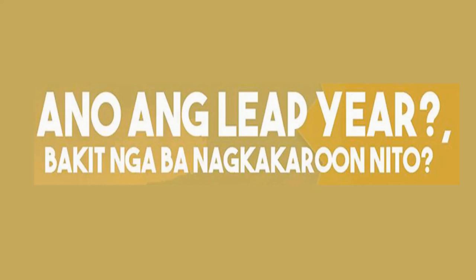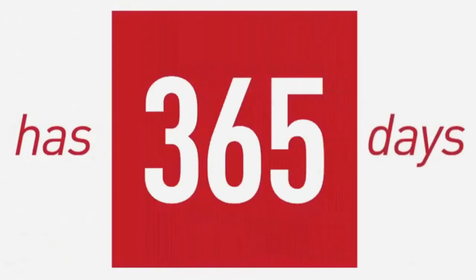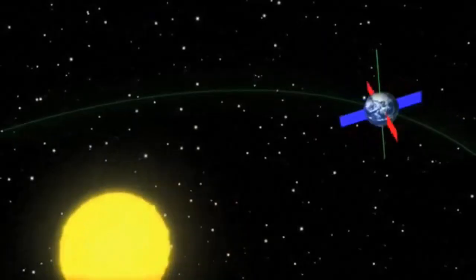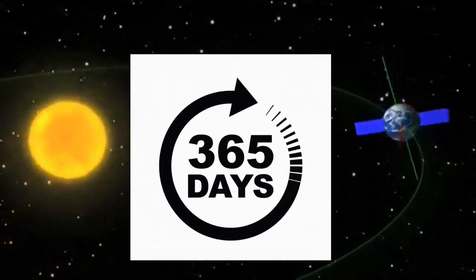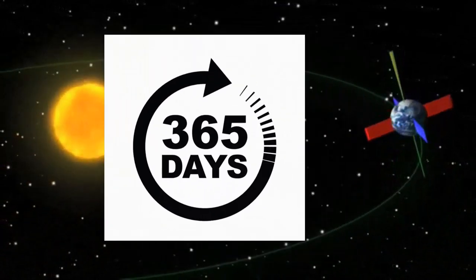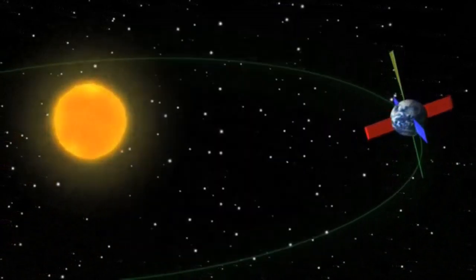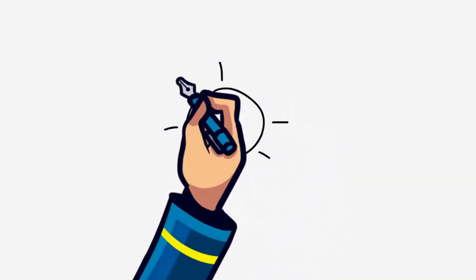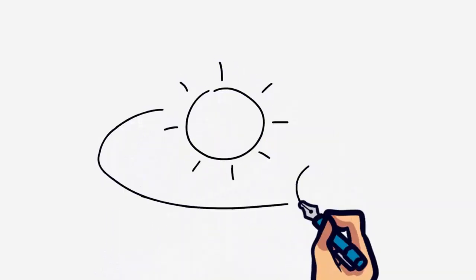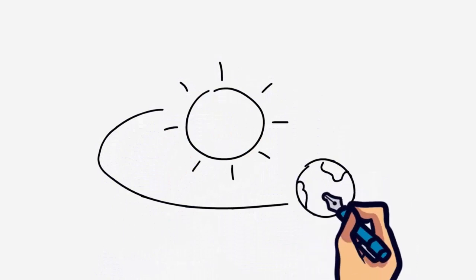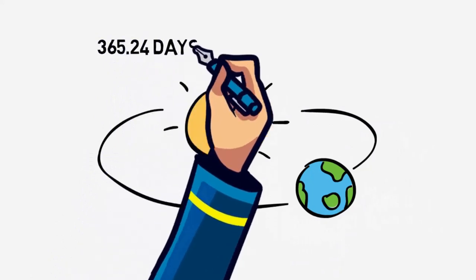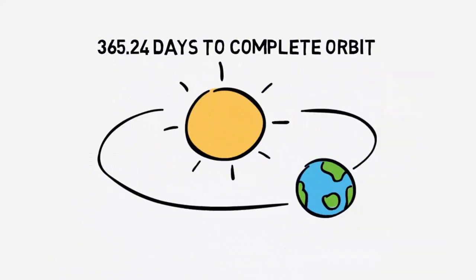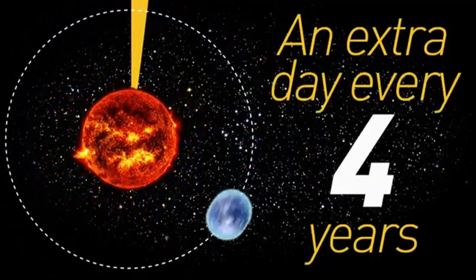Nanatili itong ganito hanggang sa mga araw na ito sa kalendaryo ng salibutan, o ang Gregorian Calendar. Na ito naman ang sinasabing dahilan kung bakit mayroon tayong mid-year. Ang karaniwang alam natin, mayroong 365 na araw sa loob ng isang taon dahil 365 ang pag-ikot ng mundo sa paligid ng araw. Pero ang hindi alam ng iba, di eksaktong 365 ang pag-ikot ng mundo dahil ang isang revolusyon ng mundo sa paligid ng araw ay binubuo ng 365.24 days na complete orbit.